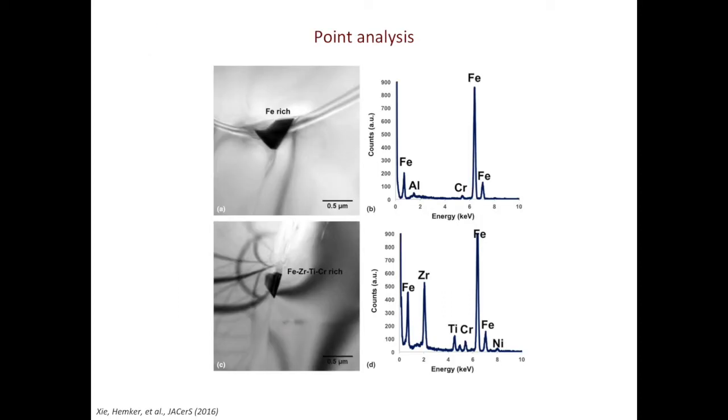When acquiring EDS data, you can do point analysis, line scan, and EDS mapping. Point EDS is pretty straightforward. You just dwell your beam on feature of interest, then collect the EDS data. In the examples shown here, EDS spectra were acquired from these precipitates. The precipitate on the top is rich in iron with small amount of aluminum and chromium. The precipitate down the bottom is rich in iron and zirconium. There's also small amount of titanium, chromium, and nickel.